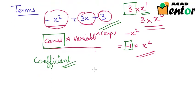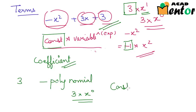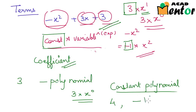I hope you are clear about what terms are and what the coefficients of those terms are. If you are curious, you would have noticed that even 3 is a polynomial, because 3 can be written as 3 times x to the power 0. So all real numbers can be written as a polynomial, and they are known as constant polynomials. For example, 4 is a constant polynomial, and so is negative 16 by 3.